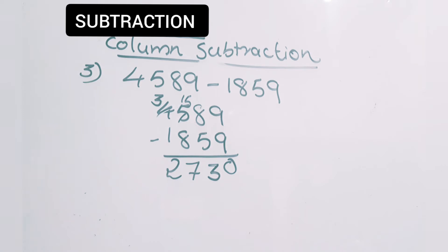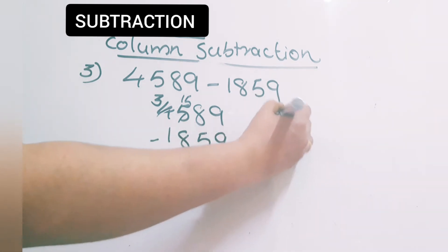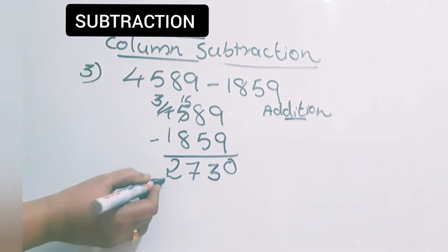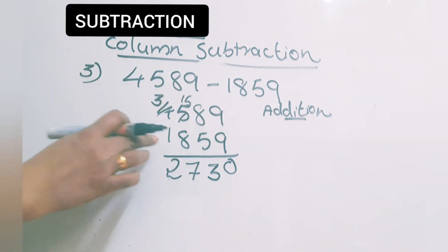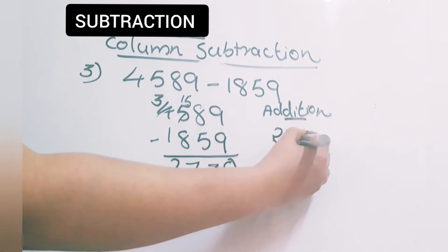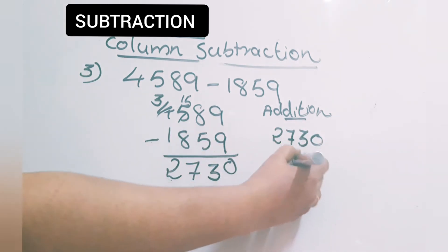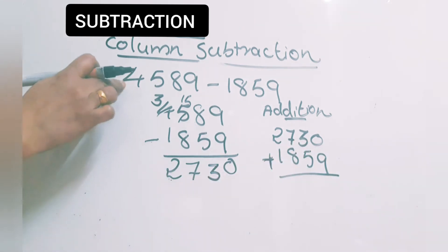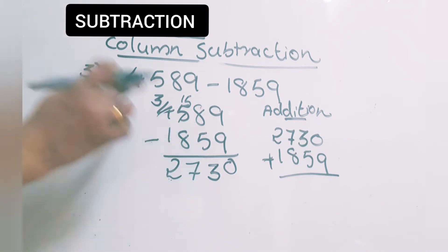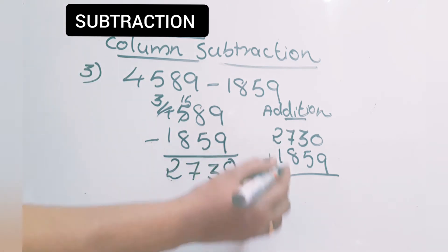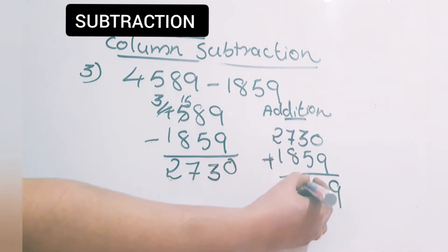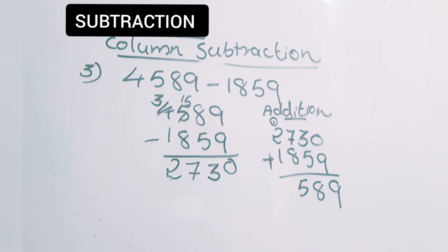Now we have to check whether we did the regrouping and subtraction correctly. There is a simple trick: check your answer through addition. The difference plus the subtrahend — that is, add this answer and the second number 1,859. These both should add up to give the minuend. Let's check: 0 plus 9 is 9, 3 plus 5 is 8, 7 plus 8 is 15 carry 1, 2 plus 1 is 3, 3 plus 1 is 4. We get 4,589. In the question also we had 4,589 — they are the same, so our subtraction is correct.